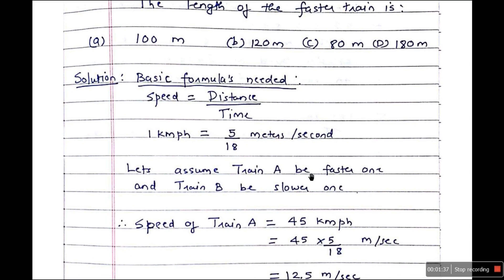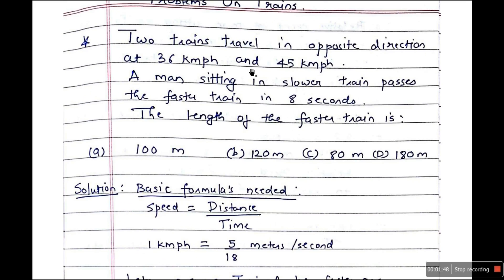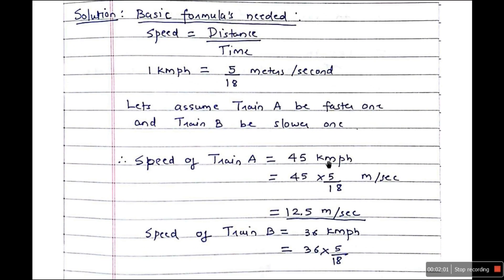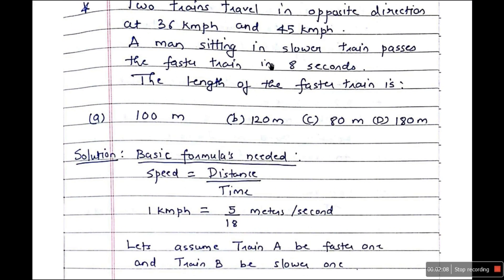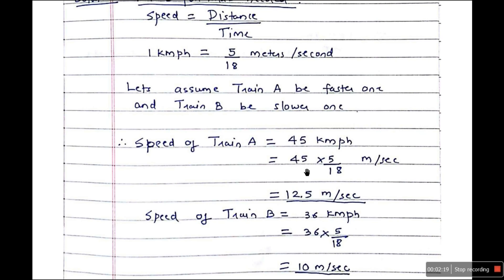Let's assume train A is the faster one and train B is the slower one. The speed of train A is 45 km per hour because we are told the faster one travels at 45 km per hour. To convert to meters per second, we multiply by 5/18, so 45 × 5/18 gives us 12.5 meters per second. Speed of train B is 36 km per hour. Multiplying by 5/18: 18 twos are 36, so 2 × 5 = 10 meters per second.